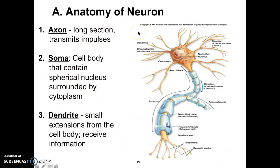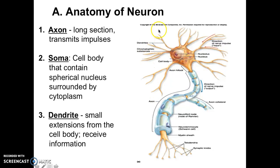The anatomy — this is all labeling and identification for this first part. The axon is the long section that transmits the impulse — that was part of muscle contraction. Your soma, which is the cell body, is where you would find the nucleus. Your dendrites are what receives information from a previous neuron.